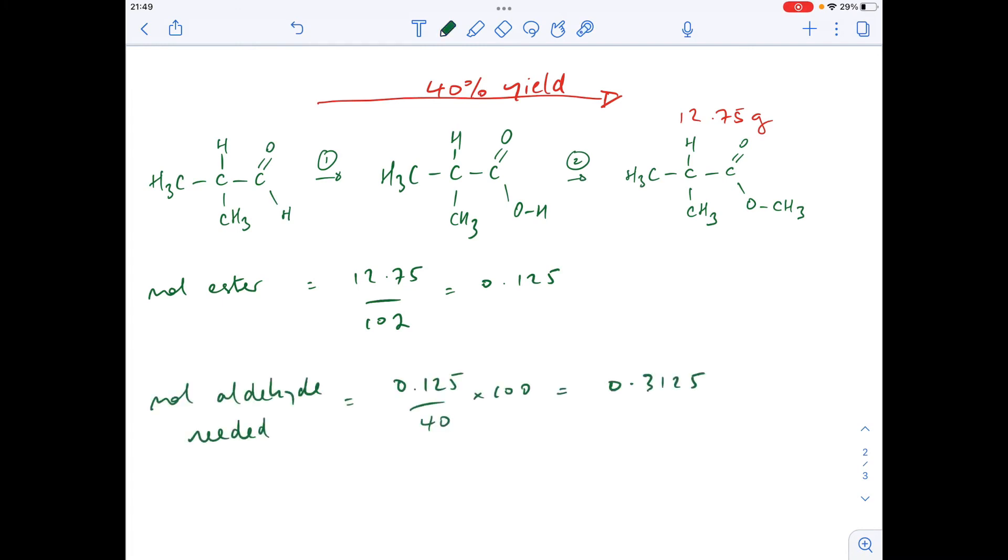Now all we need to do is turn that into grams by multiplying by the Mr of the aldehyde. That's coming out at a mass of aldehyde needed of 22.5 grams.